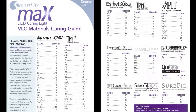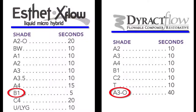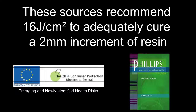Instructions with the SmartLight Max curing light recommend use from anywhere between 5 and 40 seconds depending on the shade and type of resin. According to DentSupply, this light delivers 1200 mW per centimeter squared, meaning dentists must deliver between 6 and 48 joules per centimeter squared. Alternative sources such as the Phillips textbook and the European Commission on Emerging and Newly Identified Health Risks both recommend delivering 16 joules per centimeter squared to adequately cure a 2 mm increment of resin, though this depends on shade and resin type.